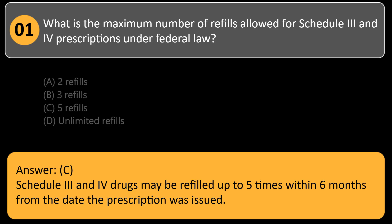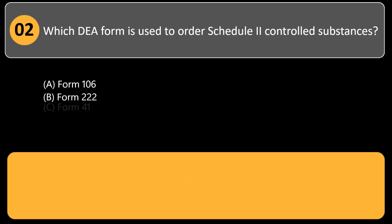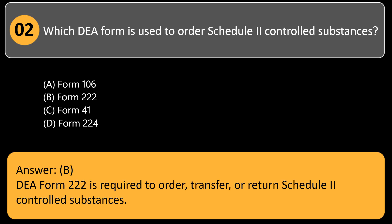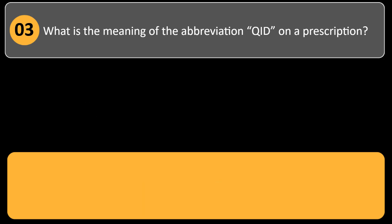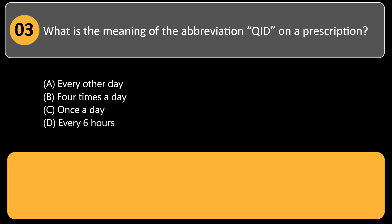Which DA form is used to order schedule two controlled substances? A) form 106, B) form 222, C) form 41, D) form 224. Answer: B. DA form 222 is required to order, transfer, or return schedule two controlled substances.